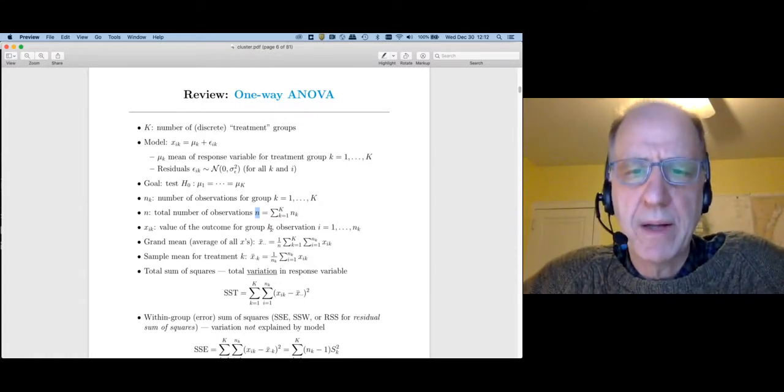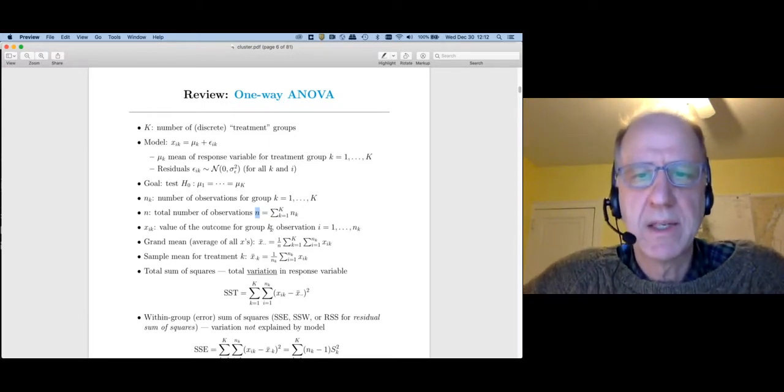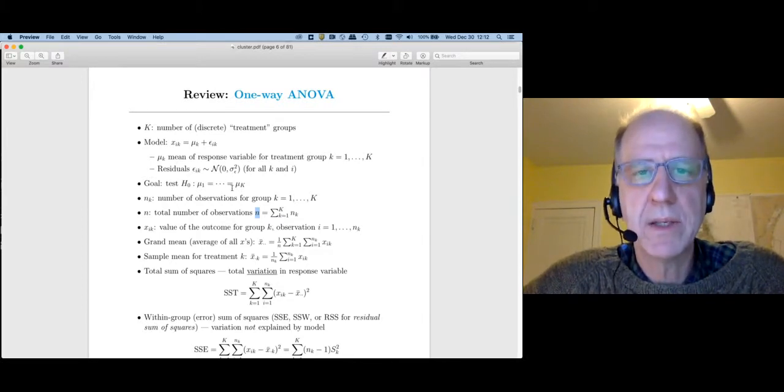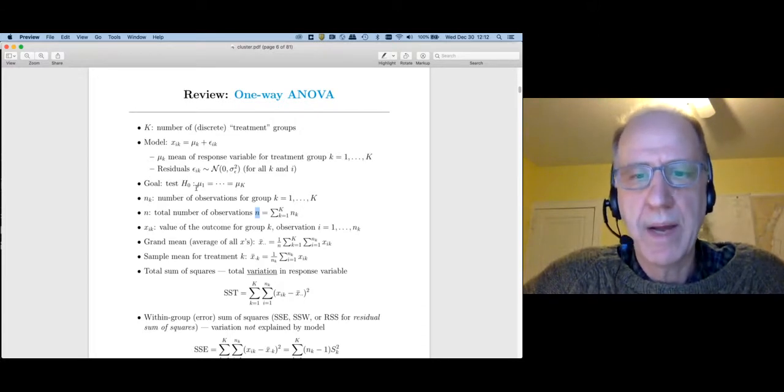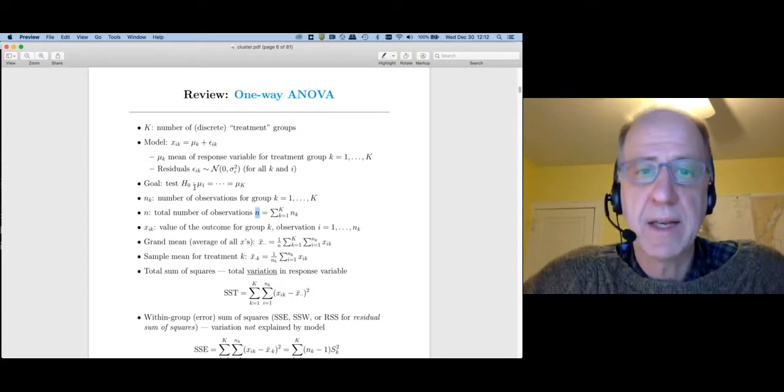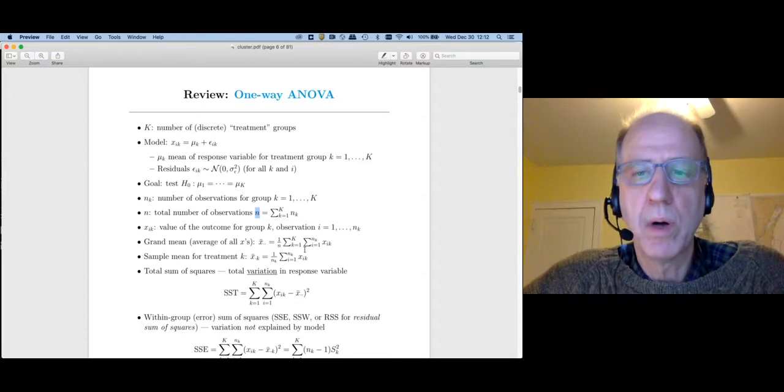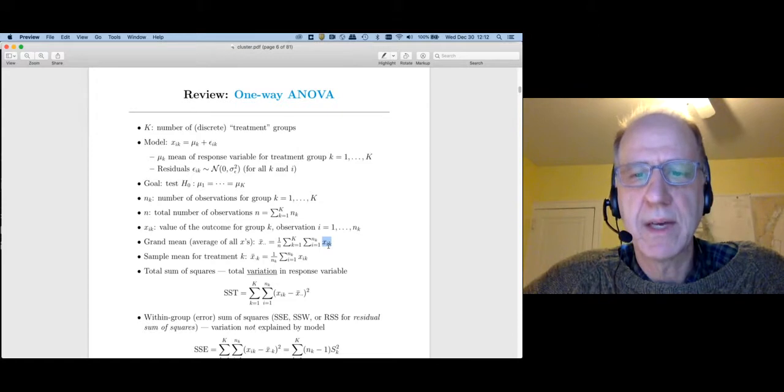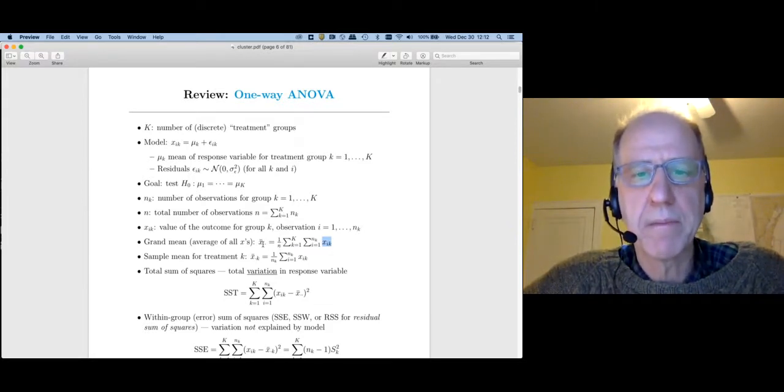So whenever we do a hypothesis test, we're fundamentally comparing some test statistic that we would get under the null hypothesis. So if we assume that all the means were the same, what would happen versus if we relax that assumption, what would happen? If we were to assume that all the means were the same, then we could just pool all of our observations together. So let's add up all of these x's across groups and within the group, divide by n. We're going to call that the grand mean.